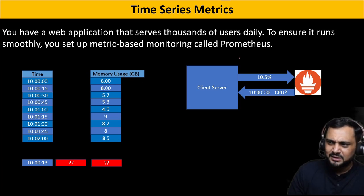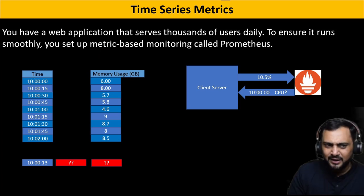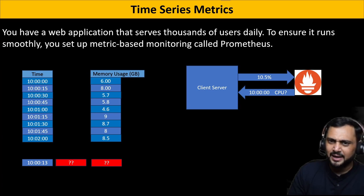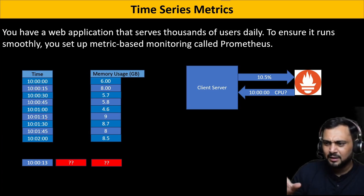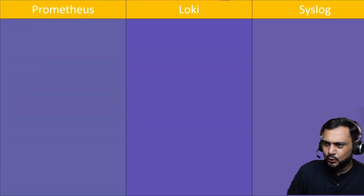For that reason we can use Prometheus. Time series means every time it sends a request and pulls the data — that is called time series data. If it's for memory it is a memory metric; if it's for CPU it is a CPU metric.